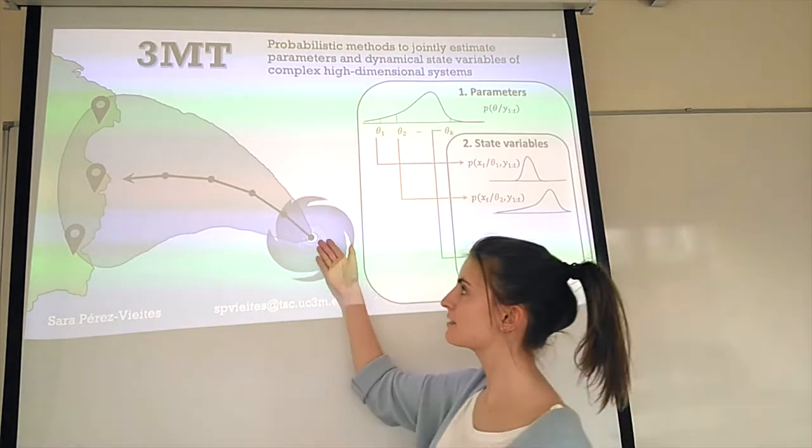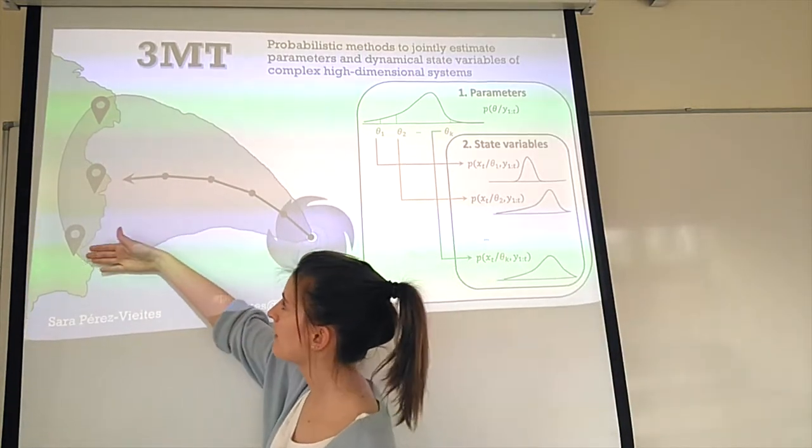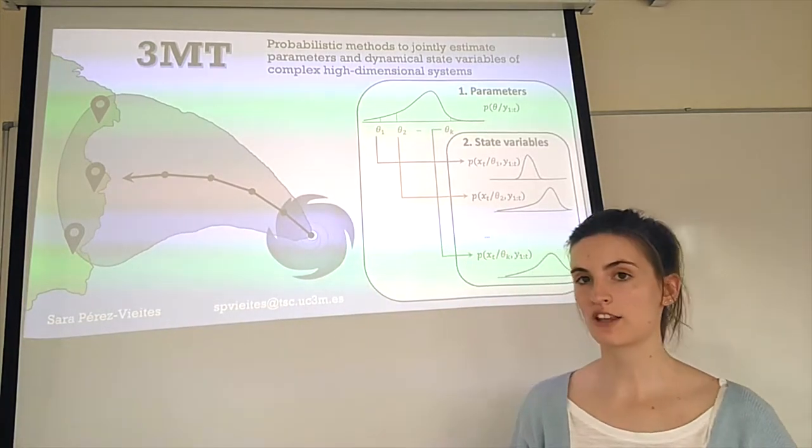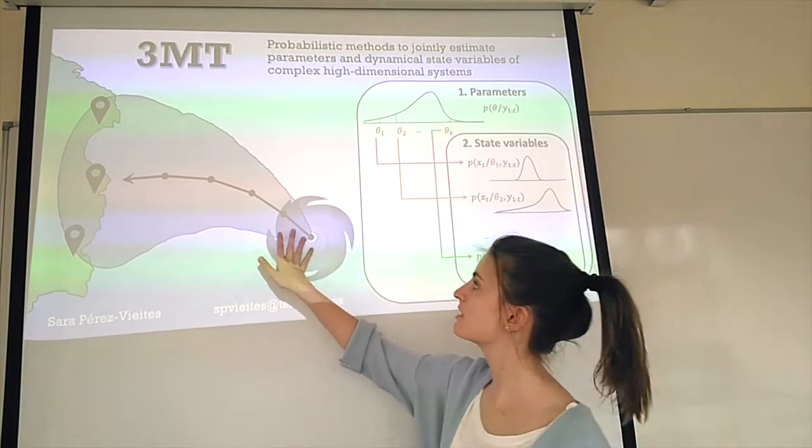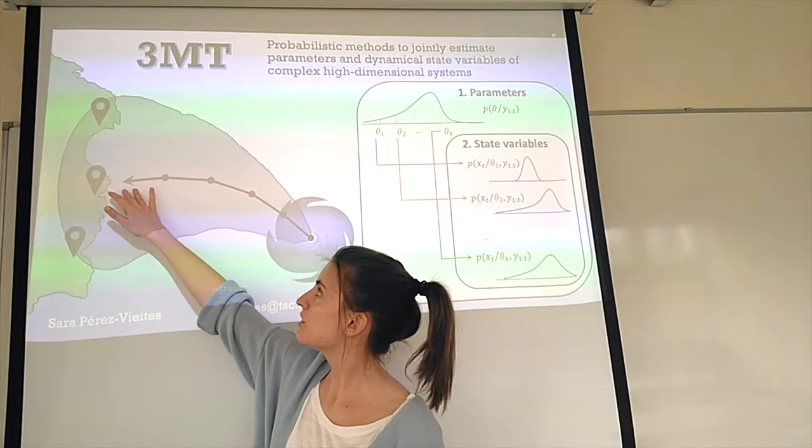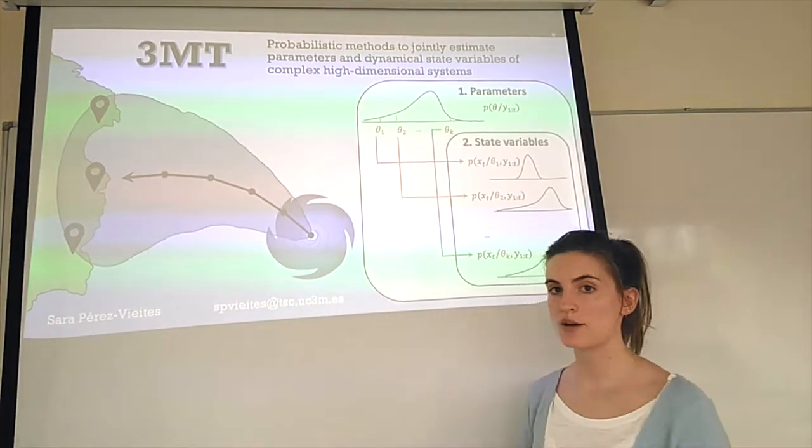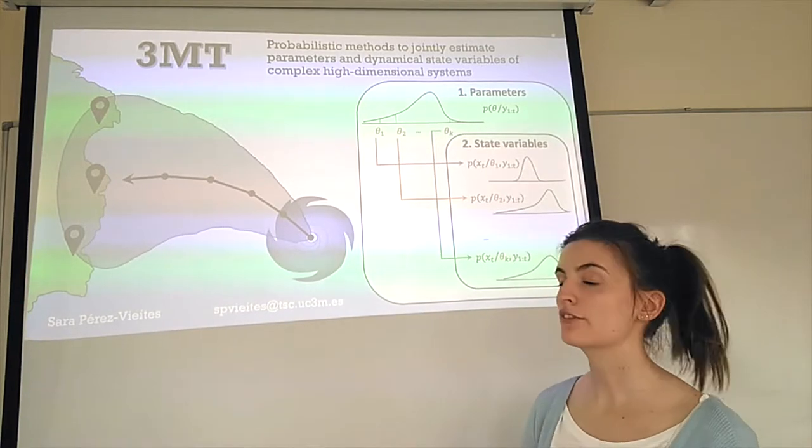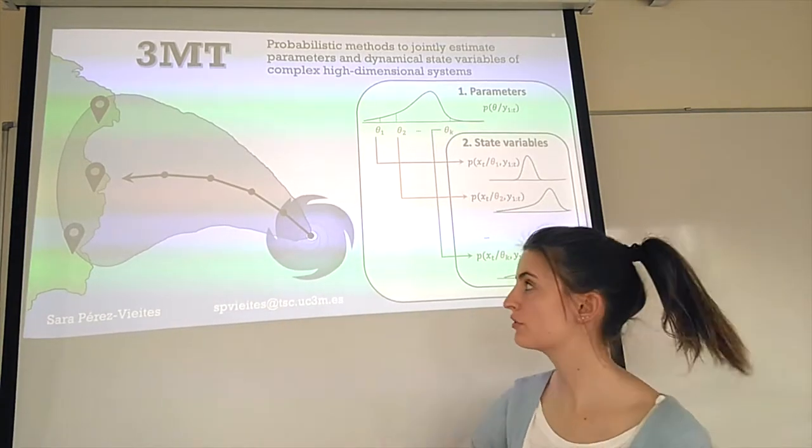Imagine a hurricane is approaching the coastline where there are a few cities. The forecast says it will make landfall in two days following this path, but the truth is that this path is only the average of all the simulation runs they have, so they have to give us a window of uncertainty.